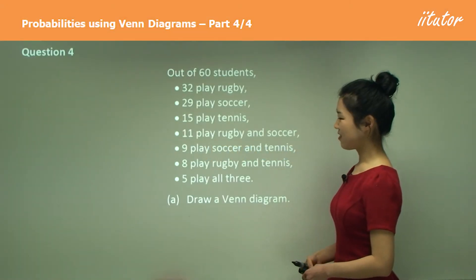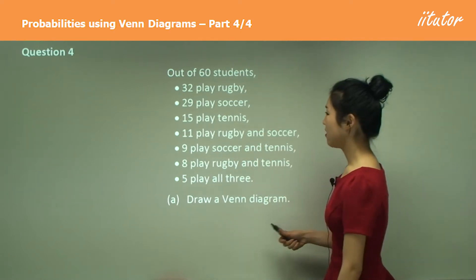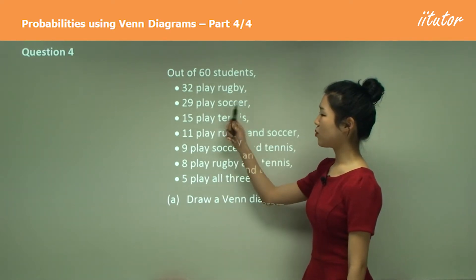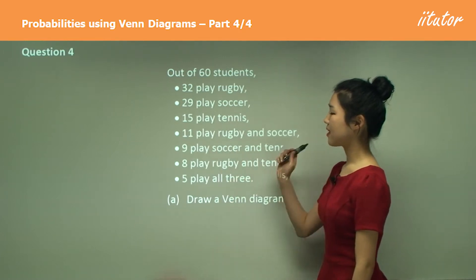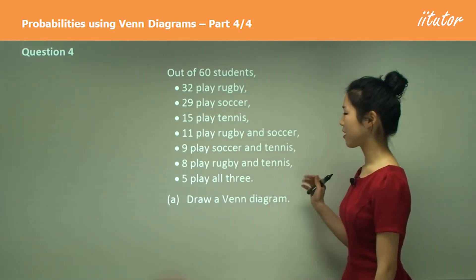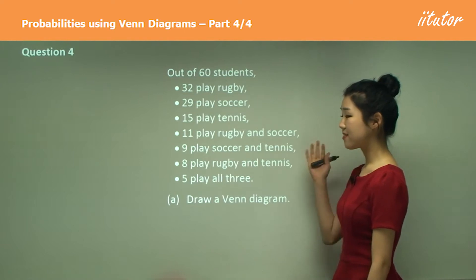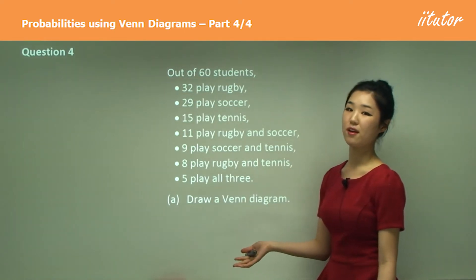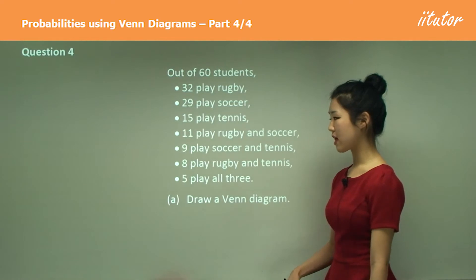Out of 60 students, they give us a list of information: 32 play rugby, 29 play soccer, 15 play tennis, 11 play rugby and soccer, 9 play soccer and tennis, 8 play rugby and tennis, 5 play all three. That's a lot of information they give us.